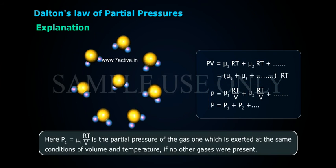Here, P₁ is equal to μ₁RT/V is the partial pressure of gas 1, which is exerted at the same conditions of volume and temperature if no other gases were present.